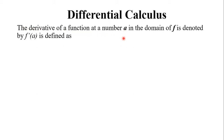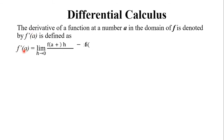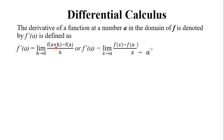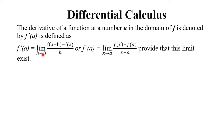The derivative of a function at a number a, where a is in the domain of f, is denoted by f prime at a, and is defined as: f prime at a is equal to the limit of f(a + h) minus f(a) over h as h approaches zero.